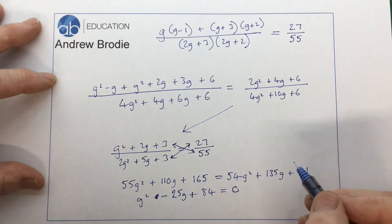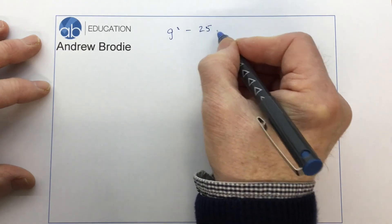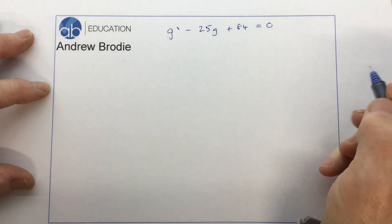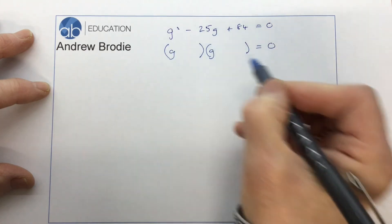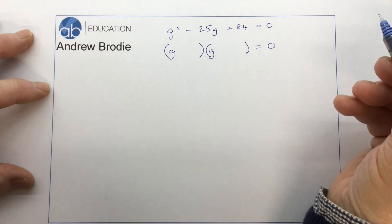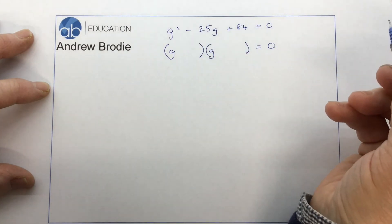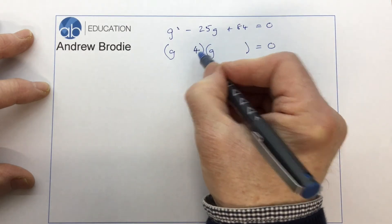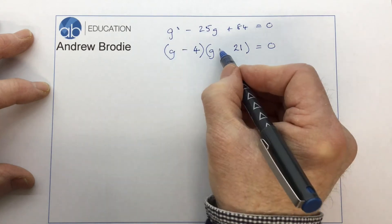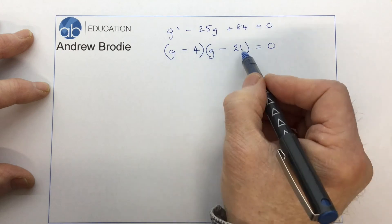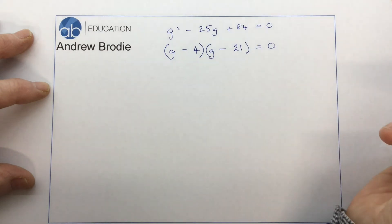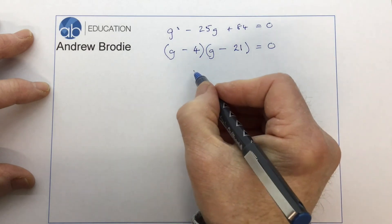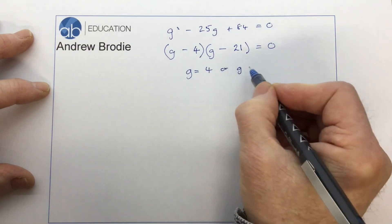So what we've got now is a very neat little quadratic. G squared minus 25g plus 84 equals zero. And we're going to factorize it. So we'll have a g and a g. We need two numbers that multiply together to make 84 and which are going to help us to get the 25 in the middle. And that is going to be minus 4 times minus 21. Solving this tells us that g is equal to 4 or g is equal to 21.